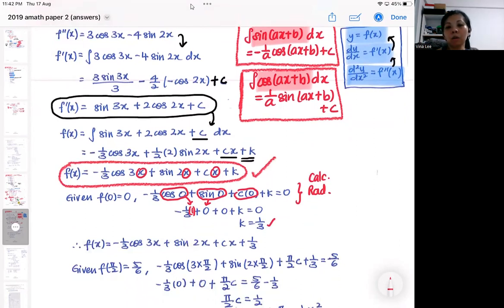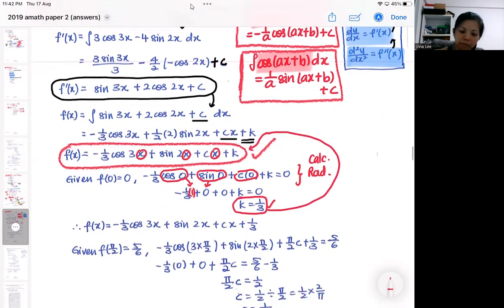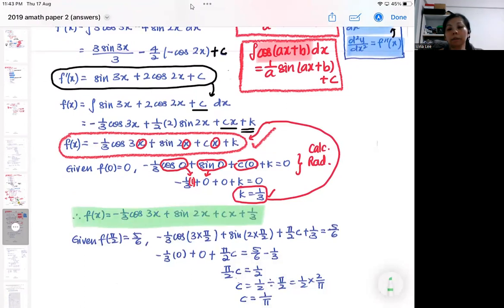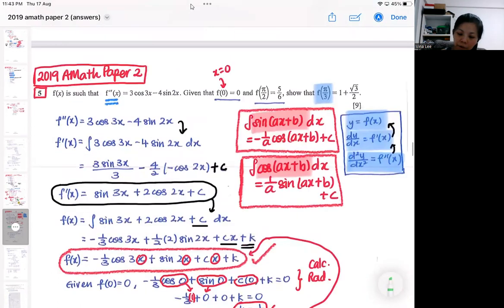So I'm down one constant down already after using one piece of information. So to avoid confusion, I prefer to put this back into the expression. So I prefer to put it back into the expression. So I'm left with one unknown. So I'm slowly getting nearer to getting a full expression. So I put back the k. Then subsequently, I'm going to use the second piece of information.